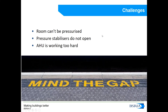When we build isolation rooms, we can face challenges. For example, rooms may not achieve the design pressure despite having correct supply and extract flow rates. It could be that the pressure stabilizer does not open, or that air handling units have to work harder than designed because the room is not getting enough pressurization. There can be a huge gap between the design of an isolation room and the real isolation room — most of these problems can be resolved with air tightness by finding and sealing the gaps.